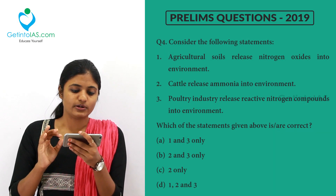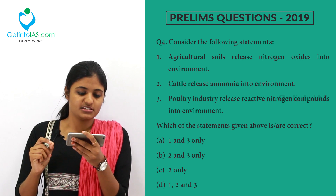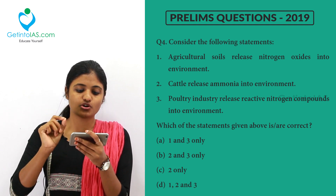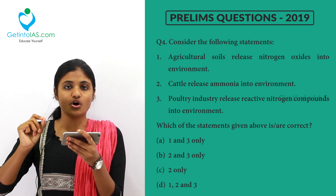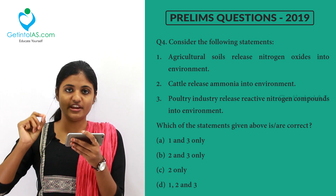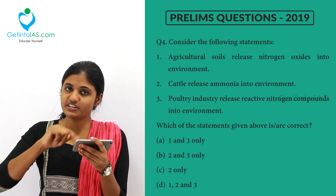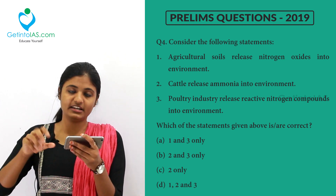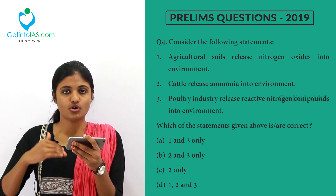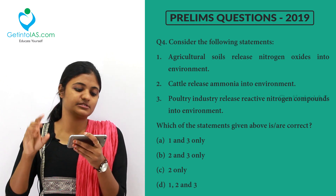Next question — consider the following statements. First: agriculture soils release nitrogen oxides into the environment. We already saw the nitrogen cycle, so definitely agriculture soils will release nitrogen oxides. That is correct.